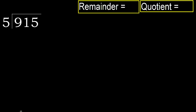915 divided by 5. Starting with 9: 9 is not less, so 5 multiplied by which number is nearest to 9 but not greater? 5 multiplied by 2 is 10, which is greater. Multiplied by 1 is 5, which is not greater. So 9 minus 5 is 4. Next, bring down to get 41.